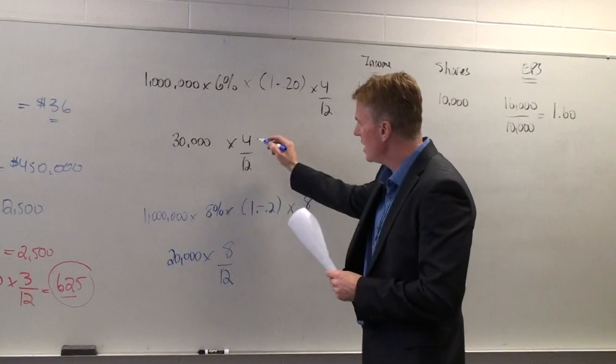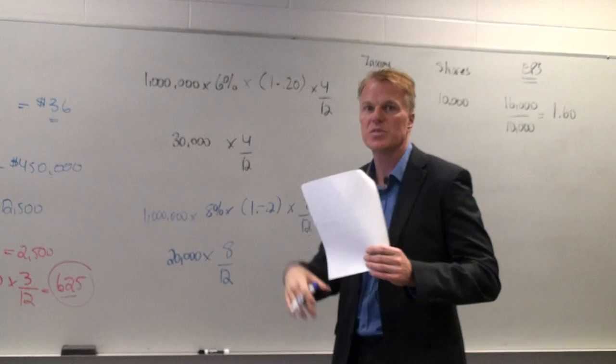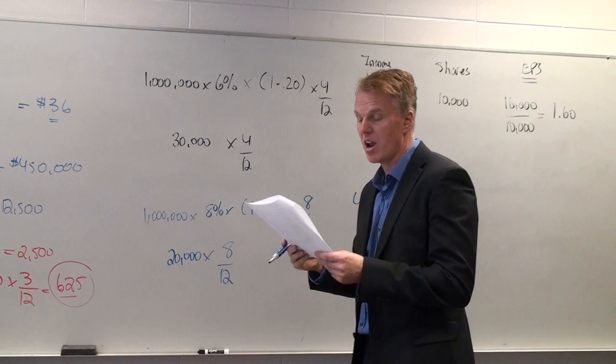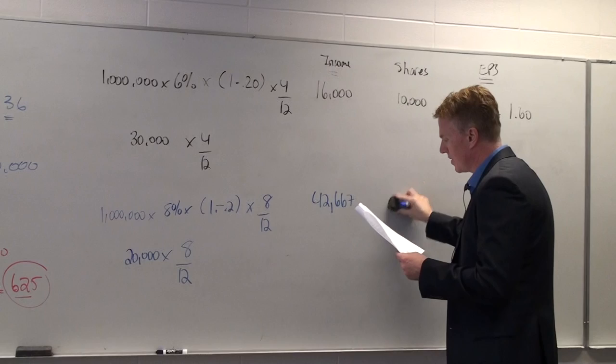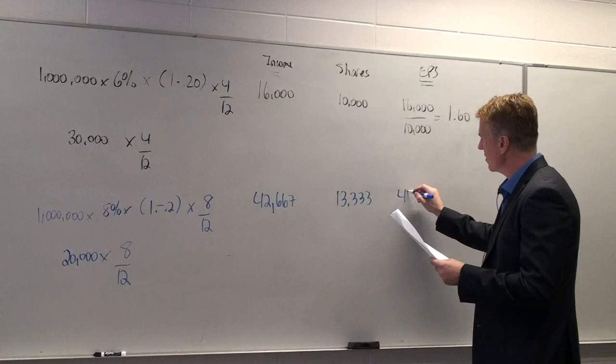So 8/12ths, this would be equal to $42,667. Again, let's look at the shares. 20,000 shares times 8/12ths. Notice that we're accounting for the full year, 4/12ths, 8/12ths. It does add up so that basically it does add up to the 12 months. So 20,000 times 8/12ths equals 13,333.